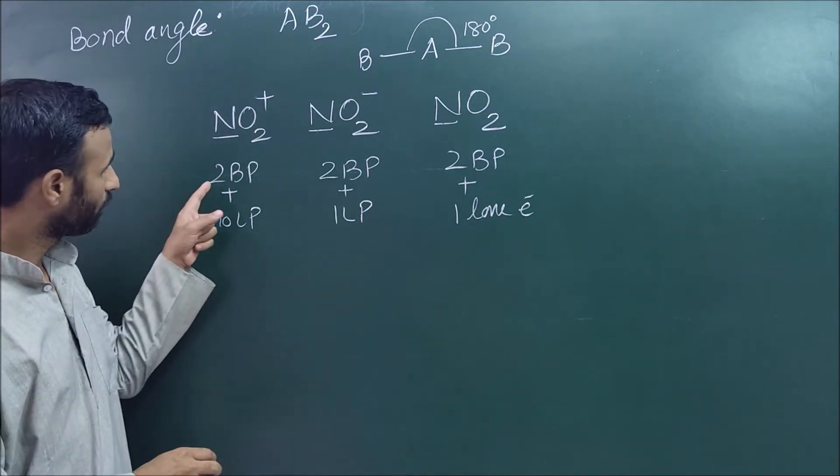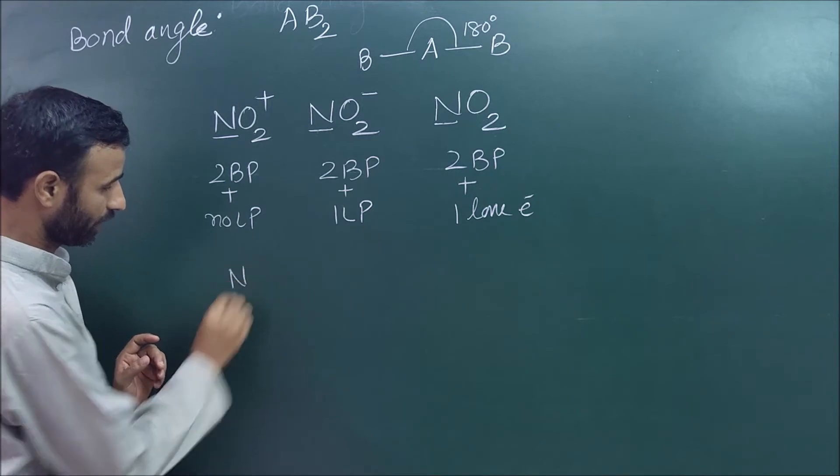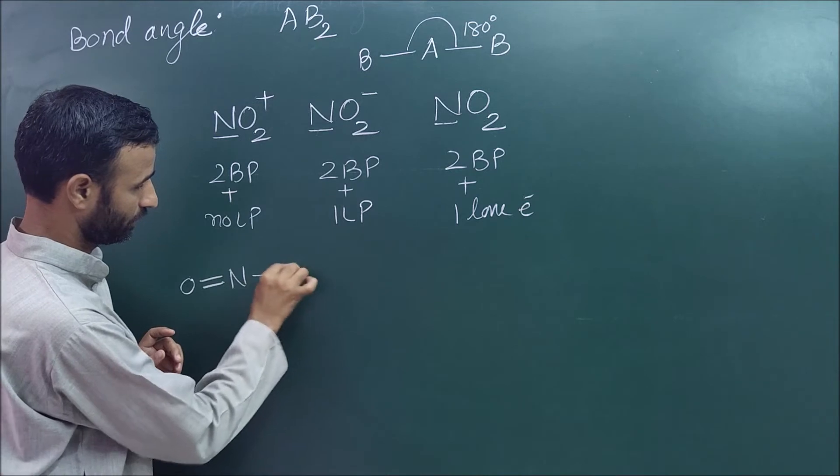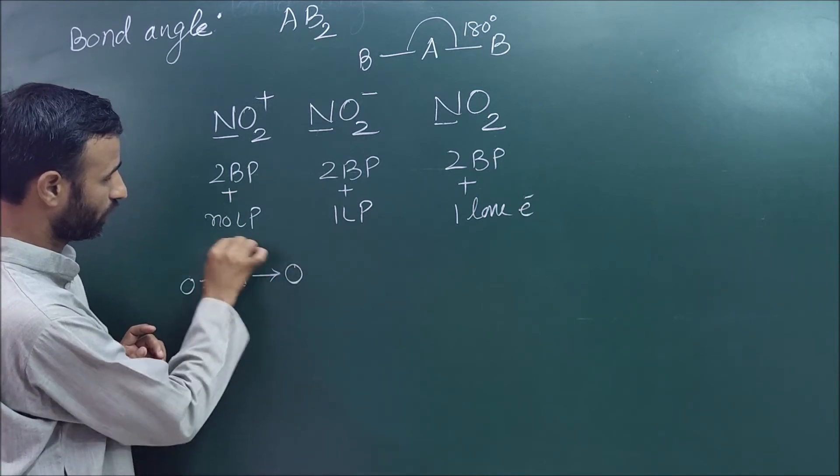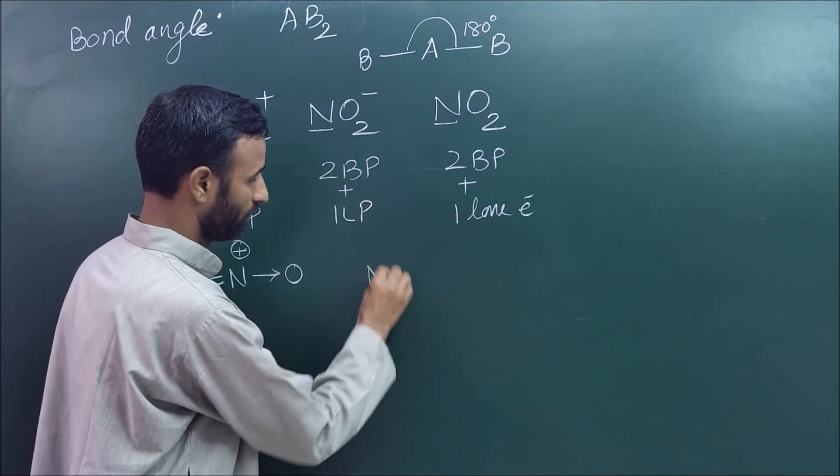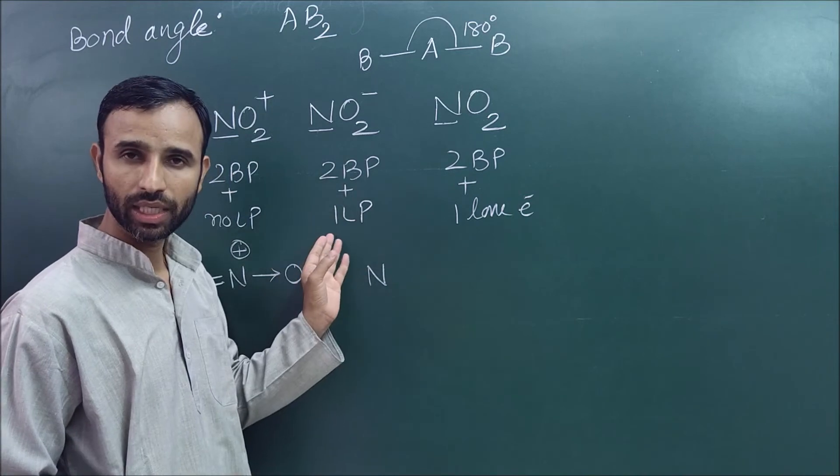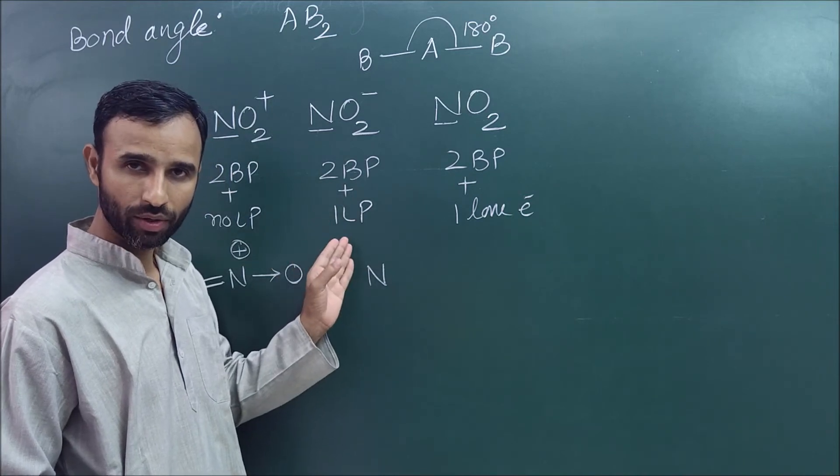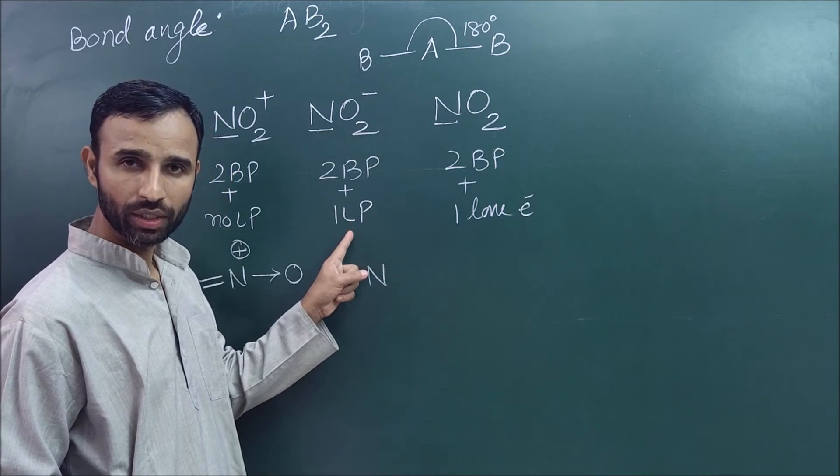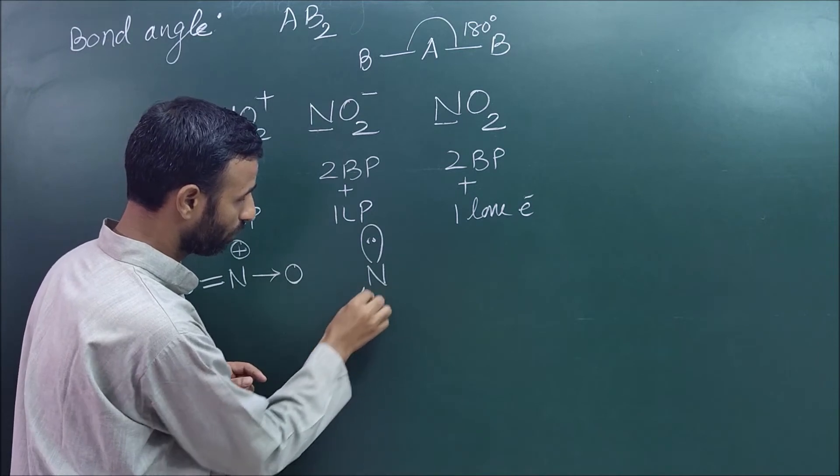Now come to the shape. We have two bond pairs only, so shape is like this. Nitrogen is positive. In this case there are three pairs, so arrangement is trigonal planar. Out of trigonal planar, one position is occupied by lone pair. So one lone pair and two bond pairs.